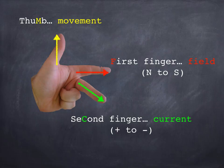So the first finger, your index finger, represents the magnetic field going from north to south. The second finger represents the direction of the current going from positive to negative. And your thumb is going to point in the direction of movement, the direction that the wire is going to experience a force.